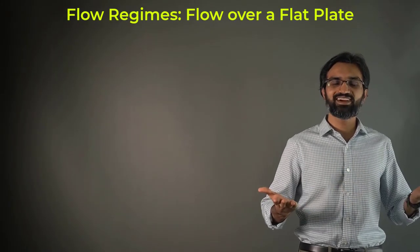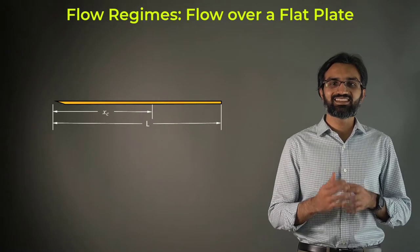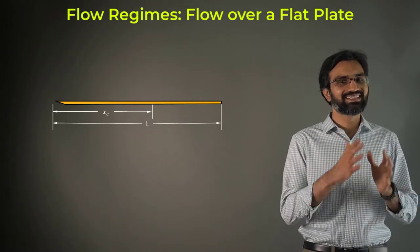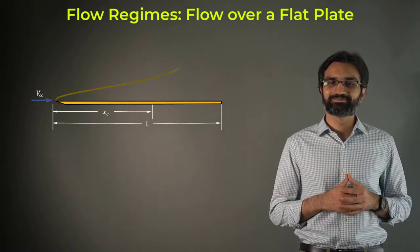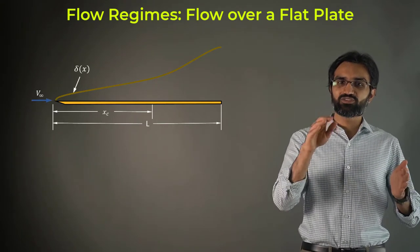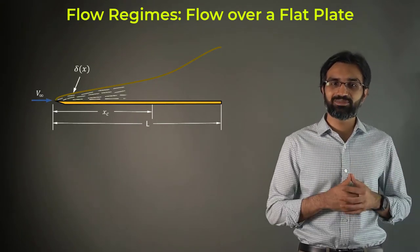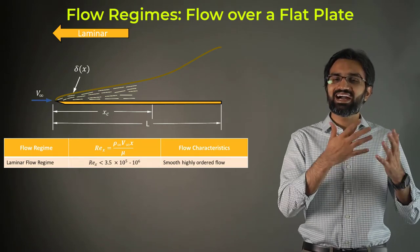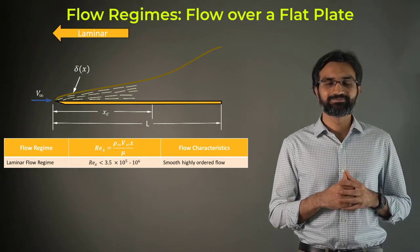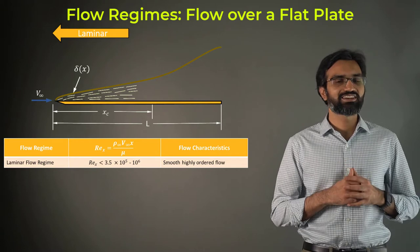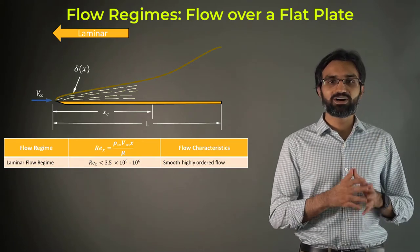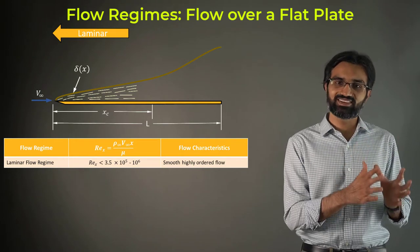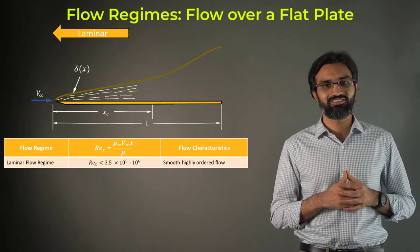The fluid flow over an infinitely long flat plate is categorized depending on the flow behavior as laminar, transitional, and turbulent. A boundary layer is formed at the leading edge of the flat plate, and the flow near this leading edge is smooth and highly ordered. This is the laminar region, where the Reynolds number based on the length of the plate is lower than approximately 3.5 × 10⁵.